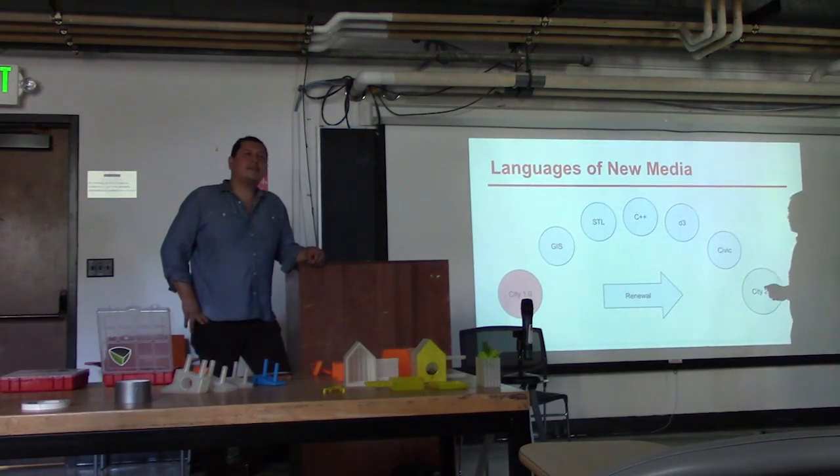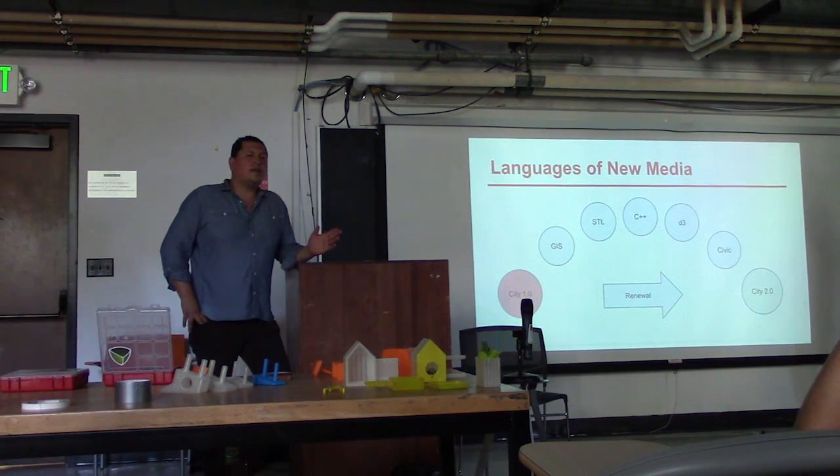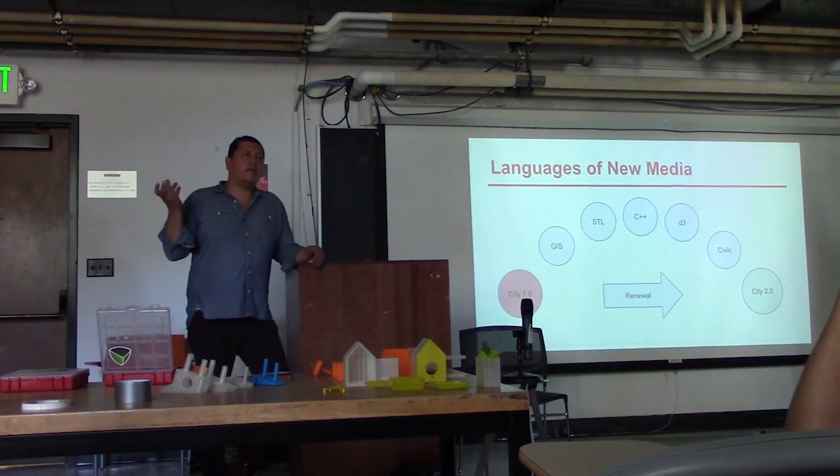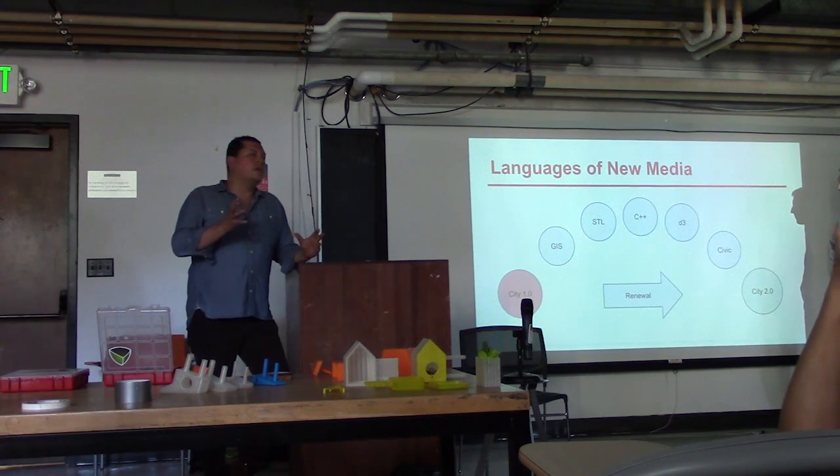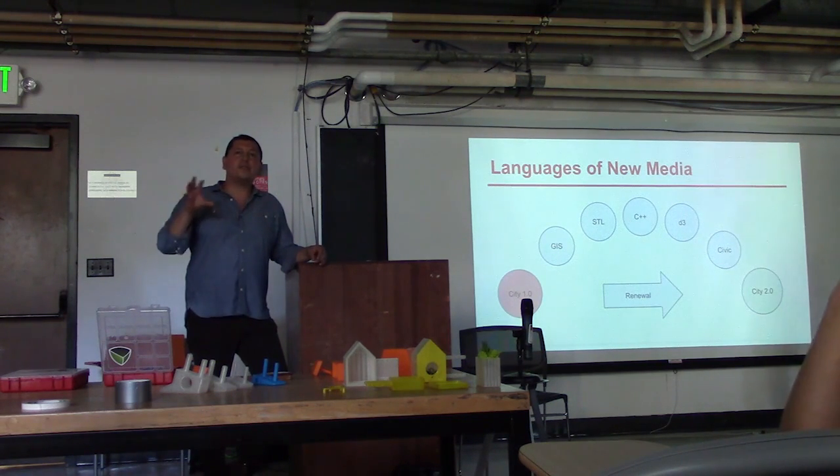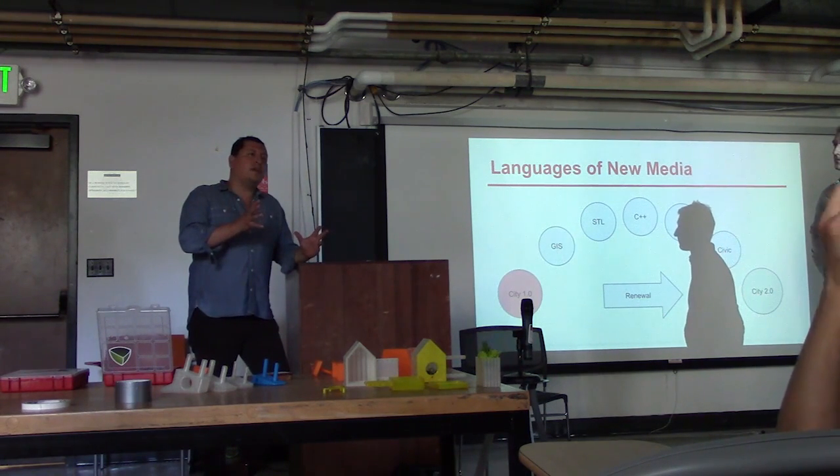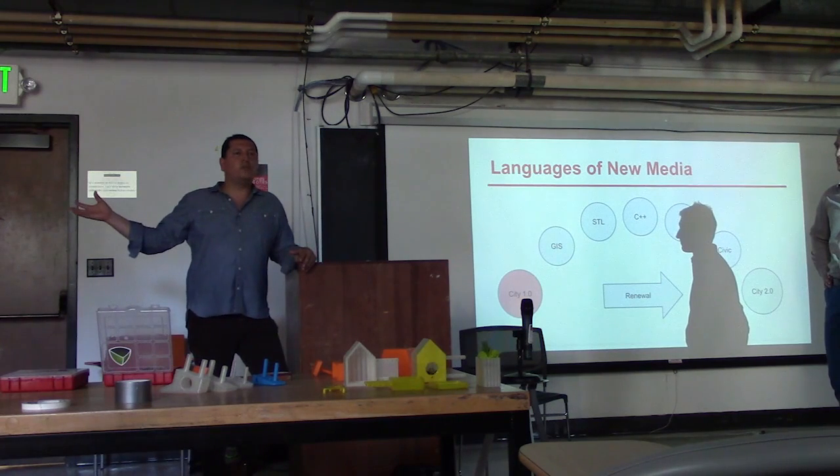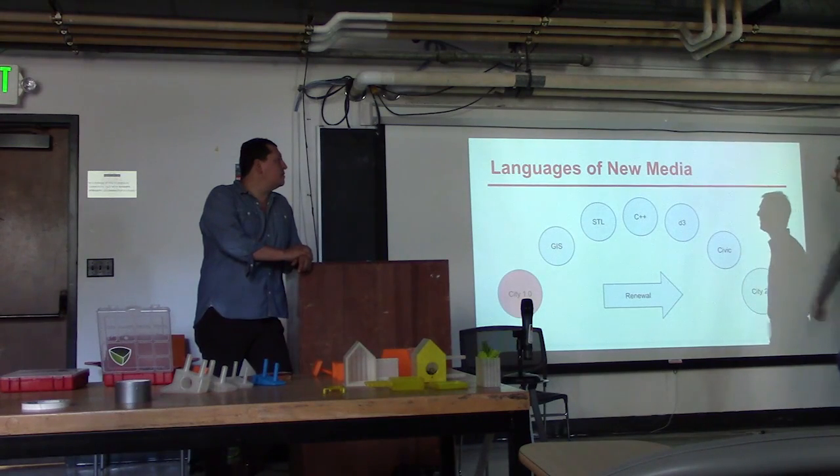The next one is STL, short for stereolithography. It's one of the oldest types of 3D printing, invented in the 80s at MIT. It's a file type that has become the fundamental file type for 3D printing, transferring digital models to speak to 3D printers. We have a 3D printer here which we're using in the class. Students are going to start engaging today to learn how to 3D model and use STL formats to produce physical objects.